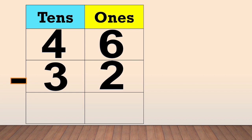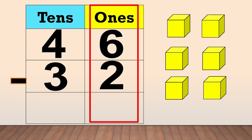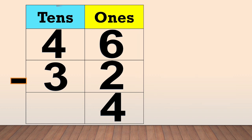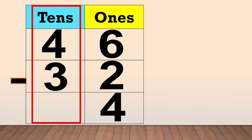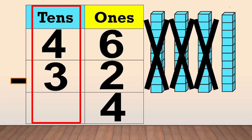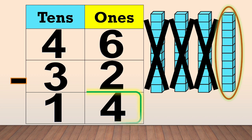Next, we subtract the ones. 6 ones minus 2 ones equals 4. Then subtract the tens. 4 tens minus 3 tens equals 1. So 46 minus 32 equals 14.